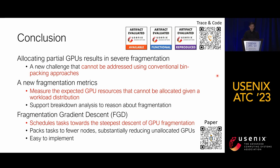To conclude, starting from the background that allocating partial GPUs results in severe fragmentation — a new challenge that cannot be addressed by existing conventional bin packing approaches — we propose a new fragmentation metric that measures the expected unallocated GPU resources given a workload distribution, and supports breakdown analysis of fragmentation causes. Based on this metric, we designed a scheduling heuristic called FGD, which is based on a very simple idea but turns out to be very effective in reducing unallocated GPUs. Thank you.